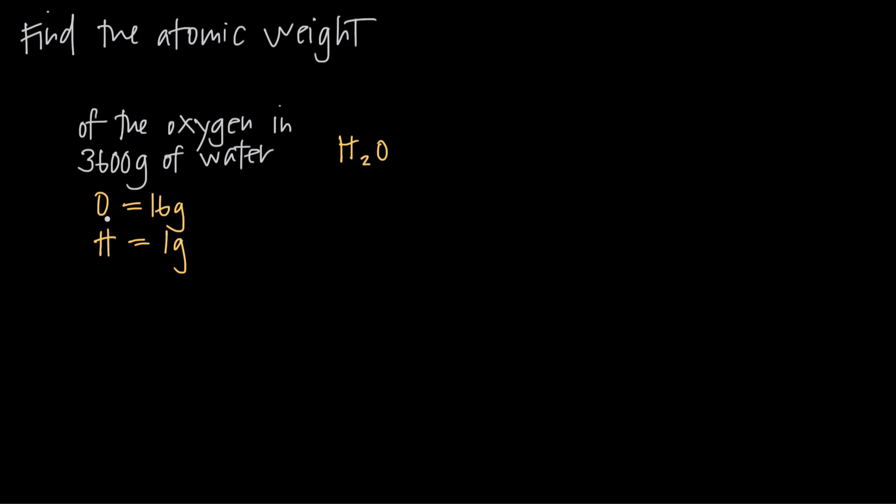So what we want to do is figure out how much the oxygen would weigh if we have 3,600 grams of water. What we need to realize is that we can set up a ratio for this problem to figure out how much the oxygen will weigh in 3,600 grams of water. So 3,600 grams is the total weight of the water, which means that we need to find the weight of one H2O molecule in order to get a ratio.